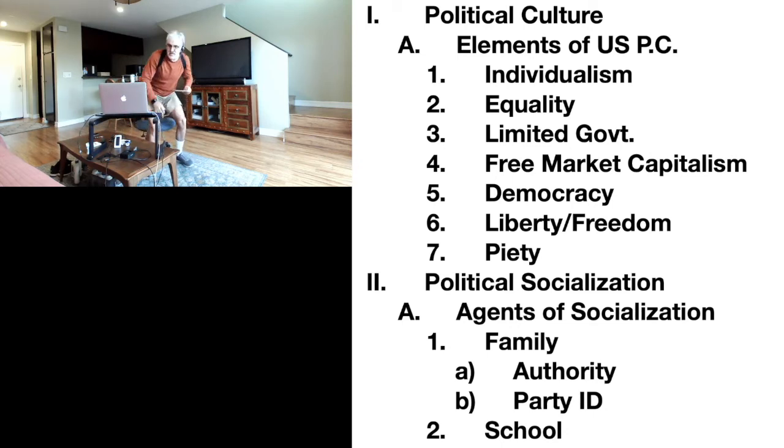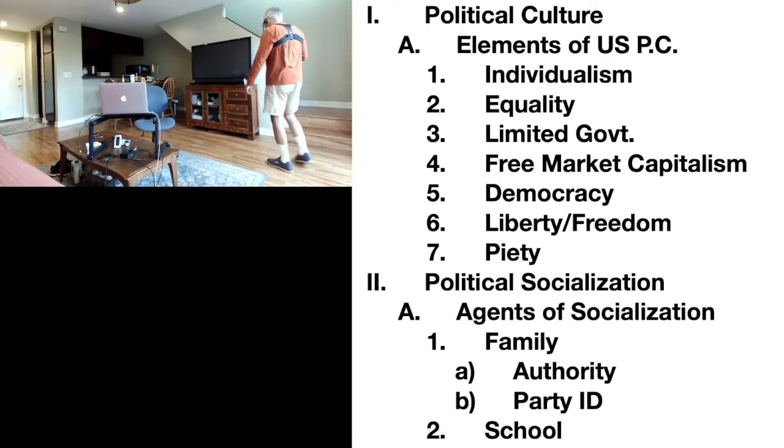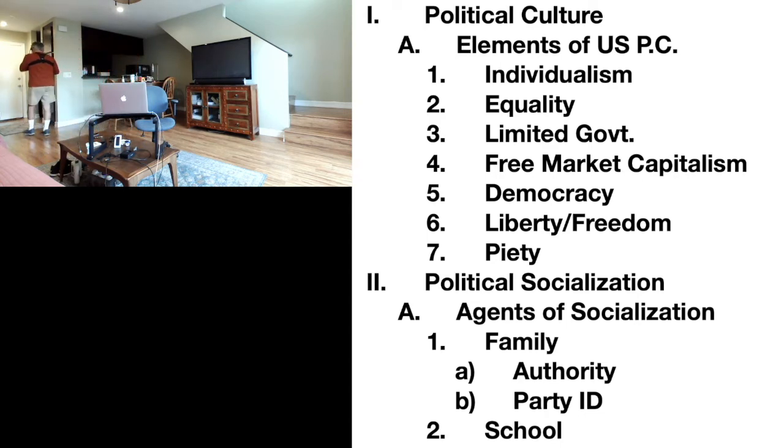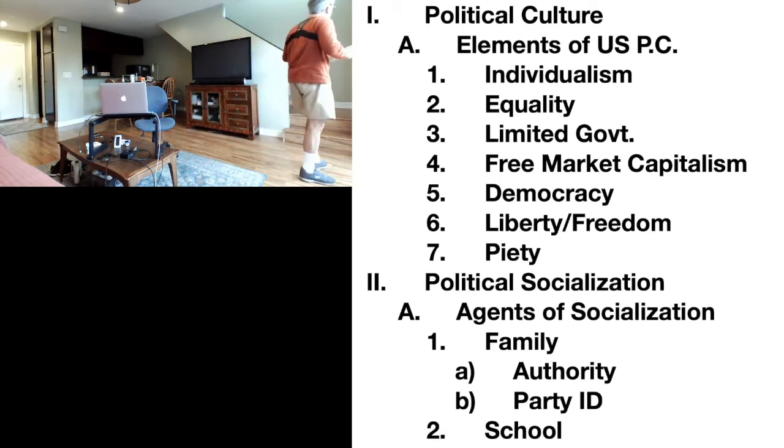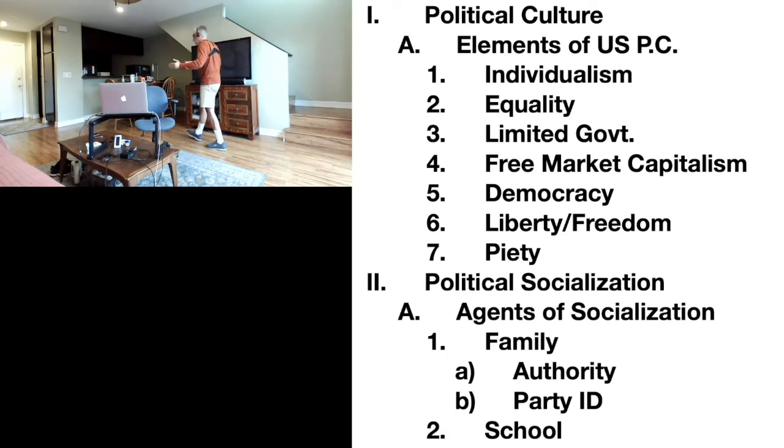Next item on the agenda is equality. There are two types of equality in the United States. The first type of equality is equality of opportunity. This is the belief that there should not be any legal barriers to prevent a person's achievement. There shouldn't be laws that discriminate and deny people their right to achieve.